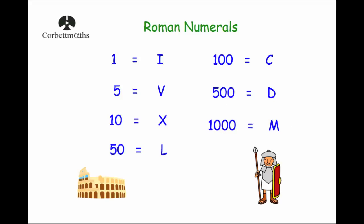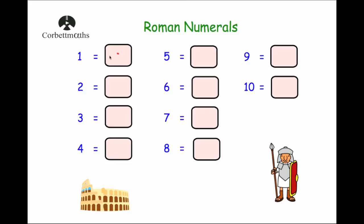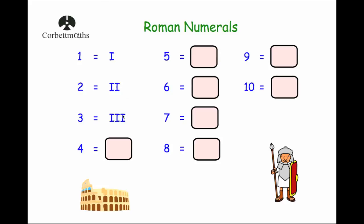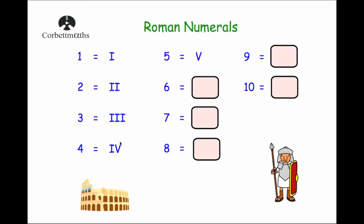Let's start off with the numbers from one to ten. One is just the letter I. Two is II — two I's beside each other. Three is III. Now four — you would think it would be IIII, but that would take a lot of time to write for some numbers. So first, remember five is V. Four instead of writing IIII, we write IV — it's one number before five.